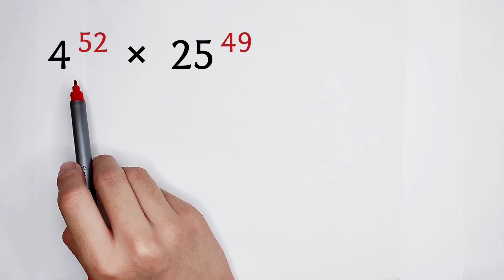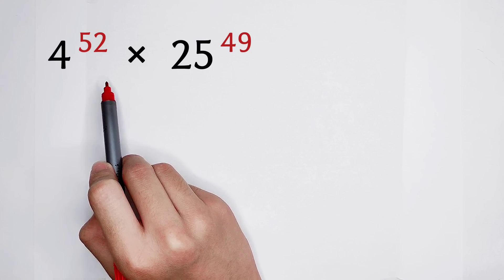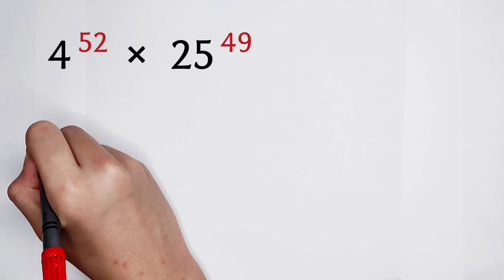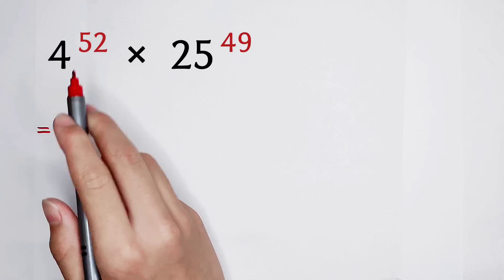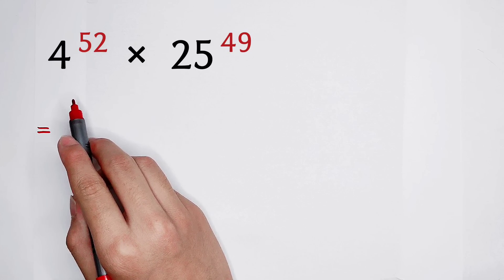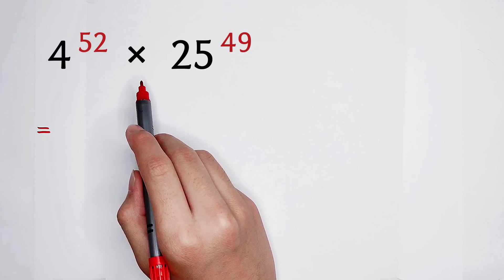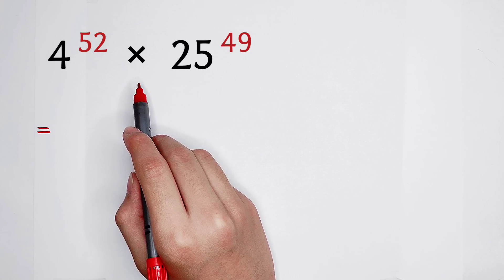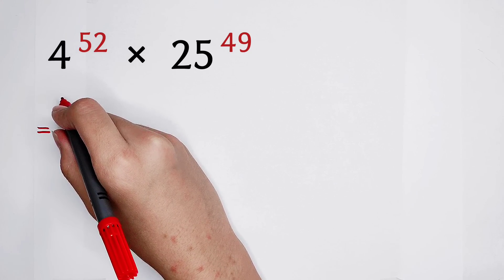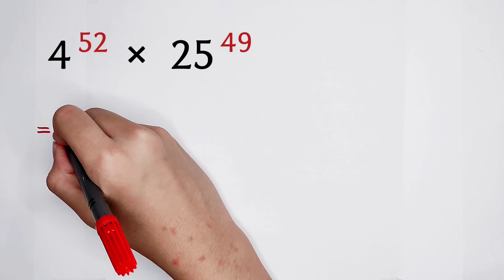Now because 52 and 49, they are pretty close. Then, 4 to the power of 52, it can be written as, 52 minus 49 is just 3. So from this main line, 4 to the power of 52 can be written as: